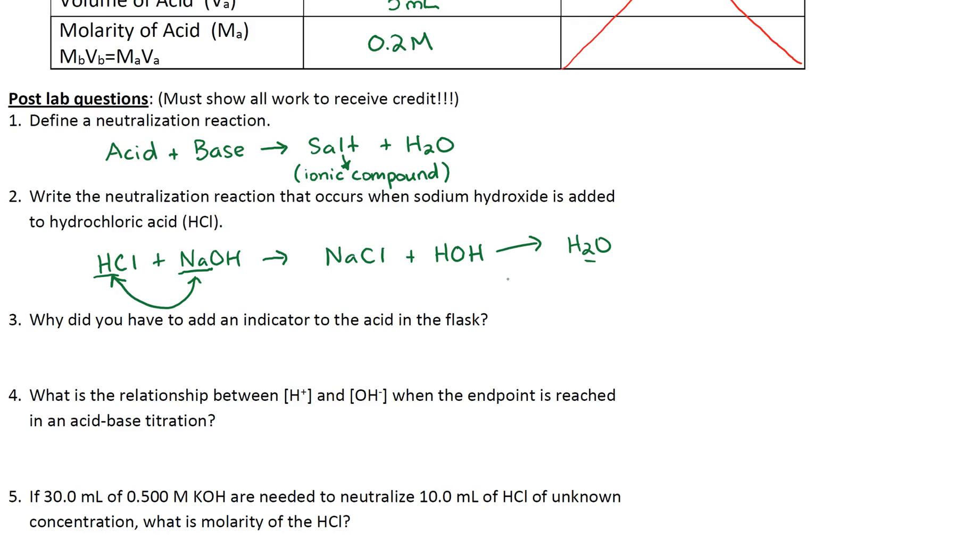Why did you have to add an indicator to the acid in the flask? That was the phenolphthalein. So both acid and base are colorless solutions. The indicator helps us determine the endpoint of a titration, or in other words when the acid-base reaction is complete. There's a permanent color change.